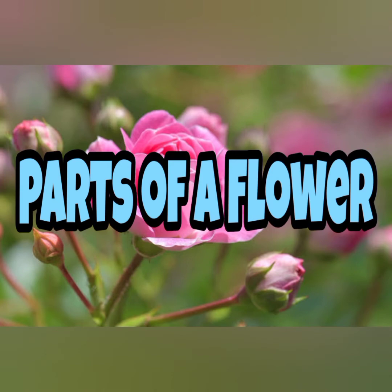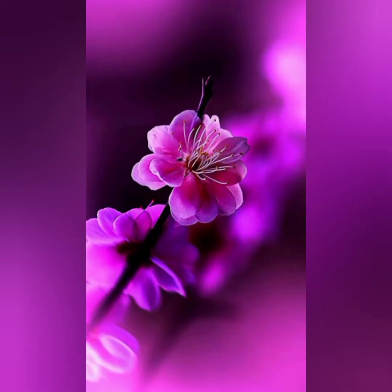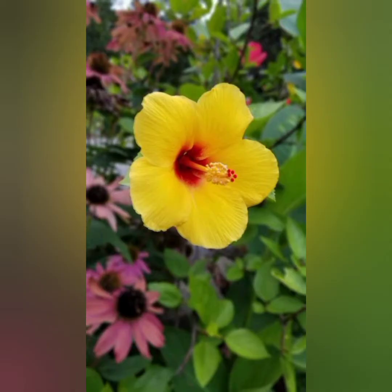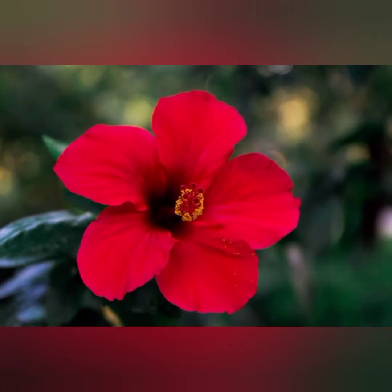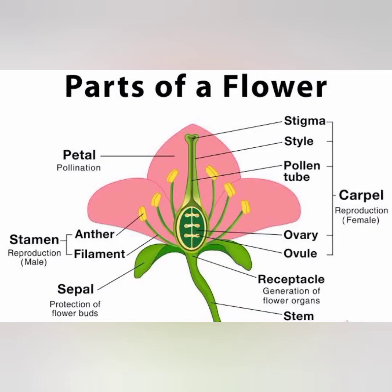Next topic is parts of a flower. Flowers vary in shape, size and color, but most flowers have the same basic structure. When we are observing a flower, we can see different parts arranged in rings or whorls. The important parts of a flower are sepals, petals, stamens and carpel.